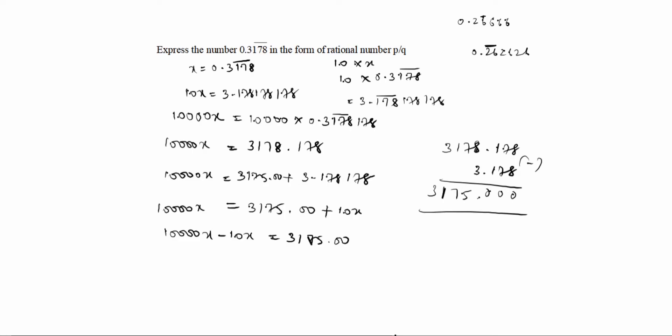Now we have to minus it: 10,000 minus 10 is 9990. So this is 9990. So 9990x is equal to 3175.